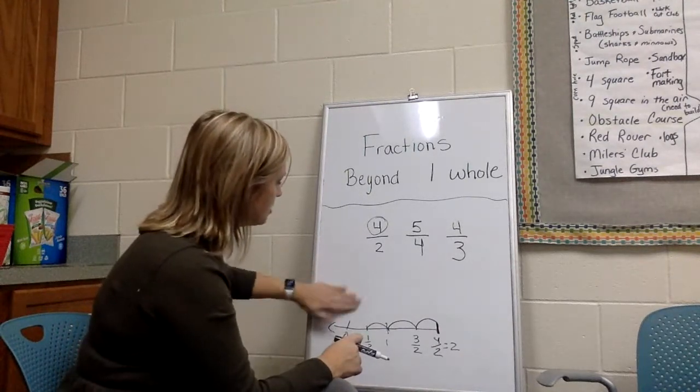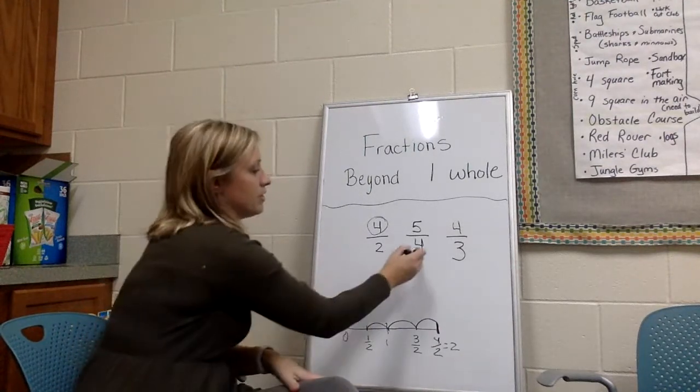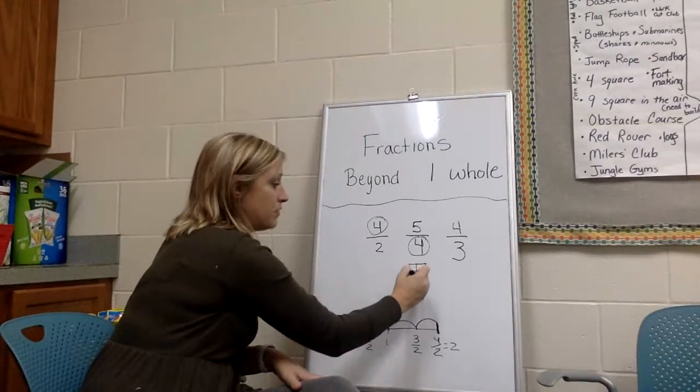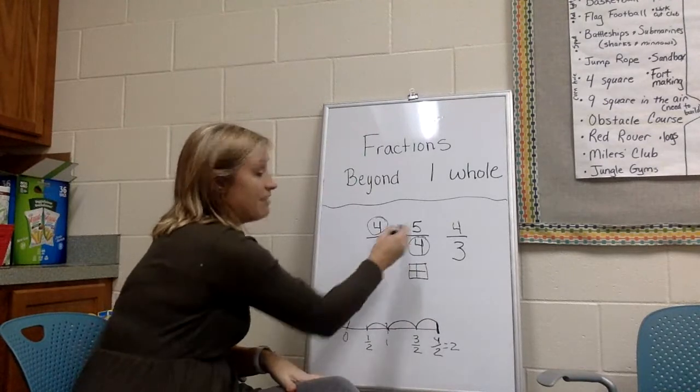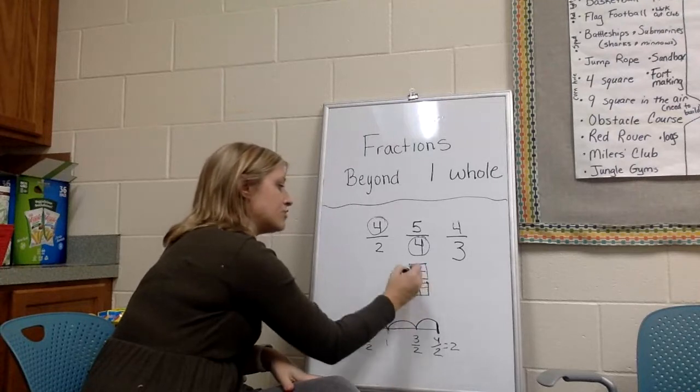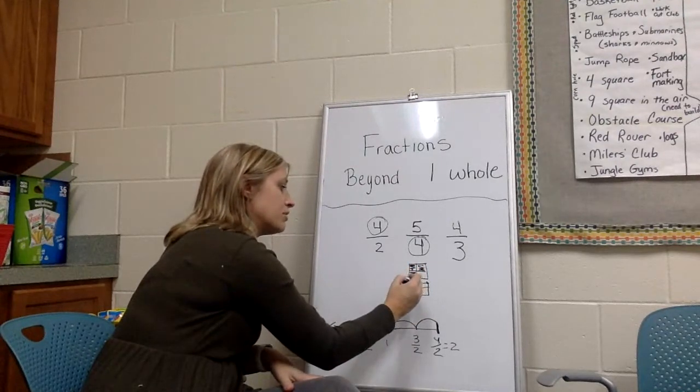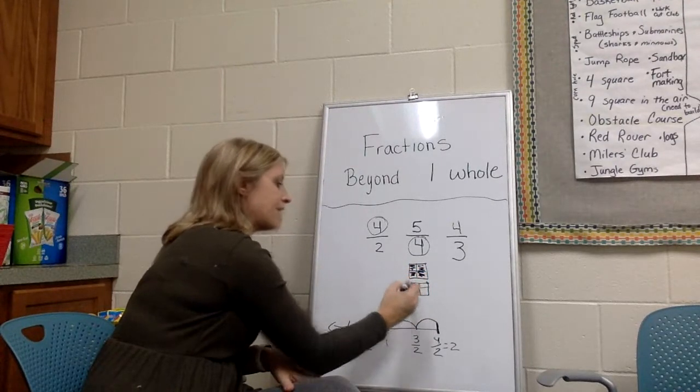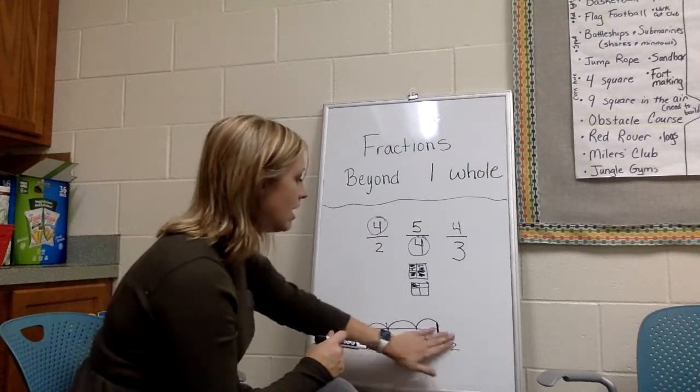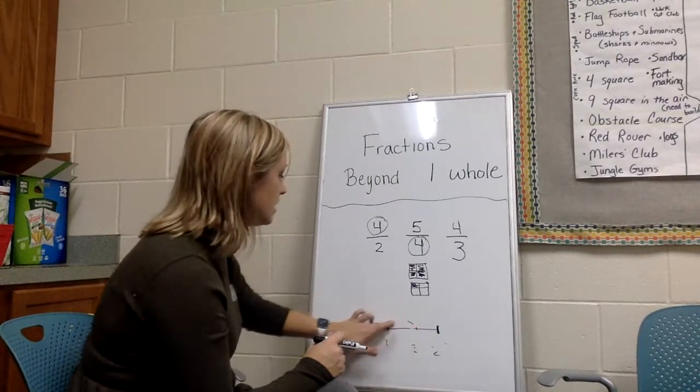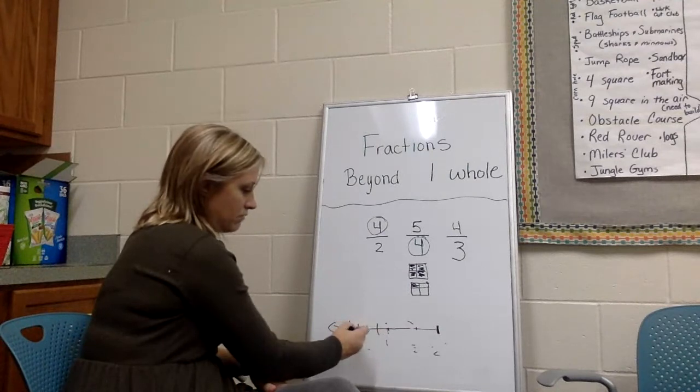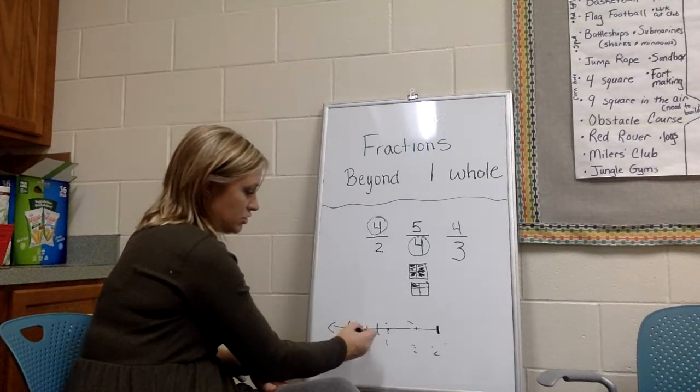Representing with a picture, you just really want to remember that the bottom number is how many pieces of the whole you have. So now I have fourths and I have five of them. I have to create another picture with fourths and now I draw in one, two, three, four, five of them. That would be my picture in fourths.